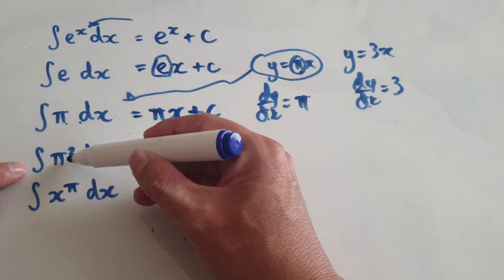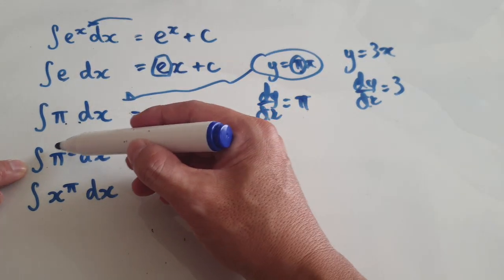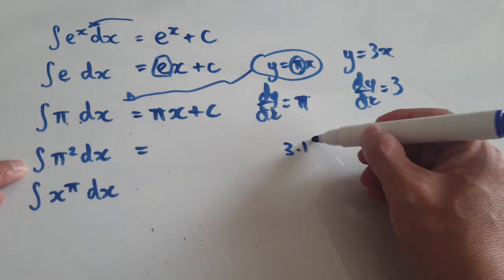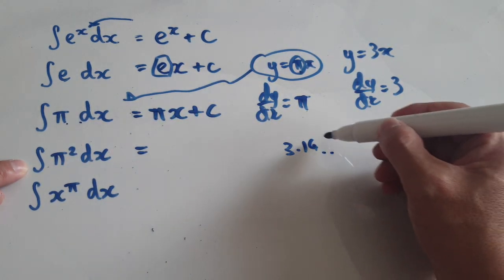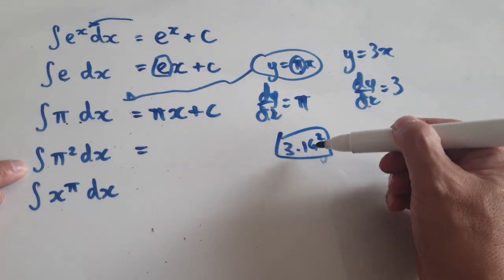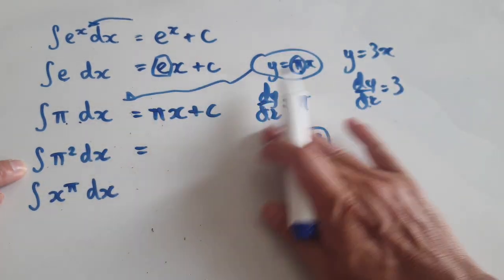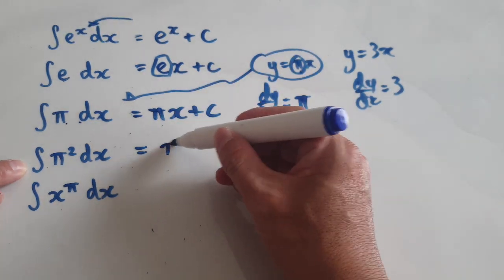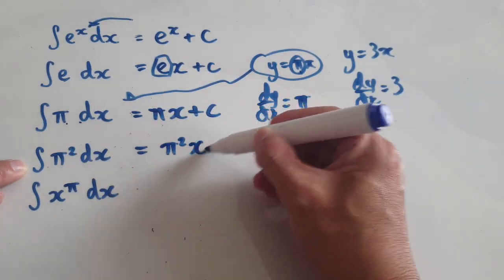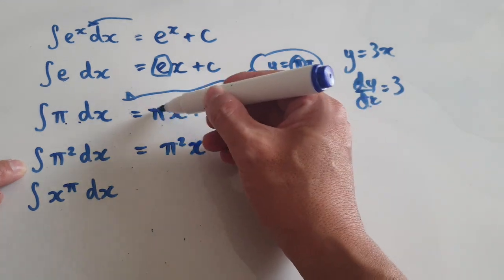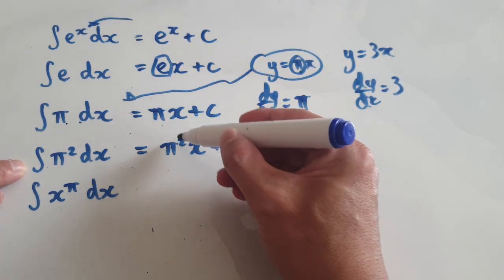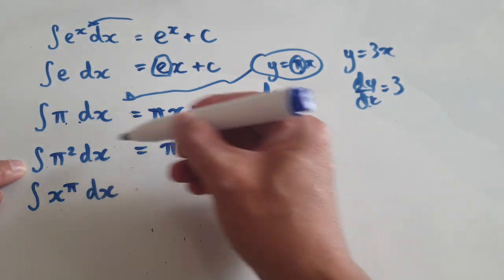Now how would you integrate pi squared? Well, this whole thing is just a number — it is 3.14 times by itself — so it turns out to be just a constant. When you integrate it, it would be that constant times x plus c, just like pi x plus c above. When you differentiate pi x you get pi; when you differentiate pi squared times x you get pi squared.